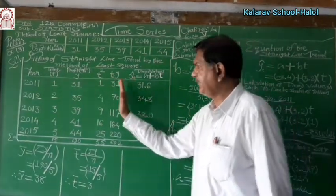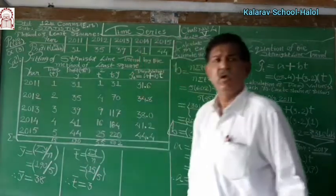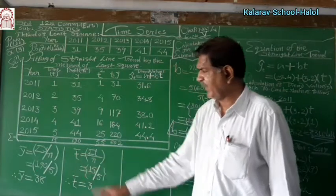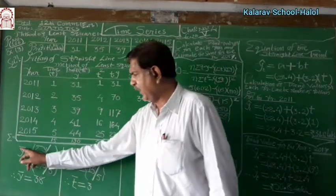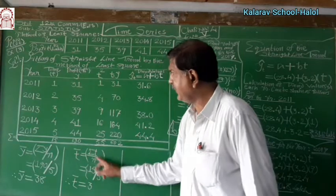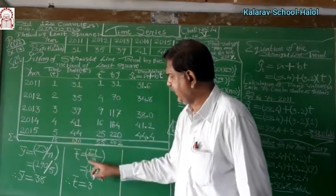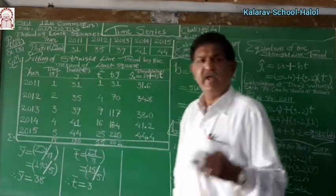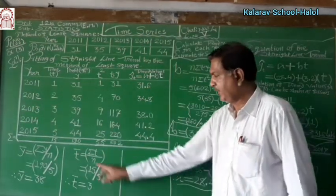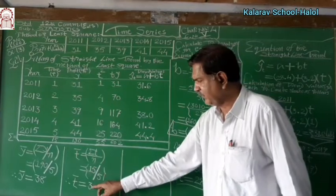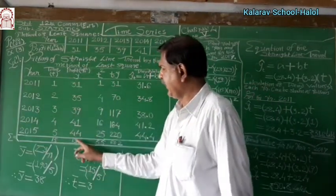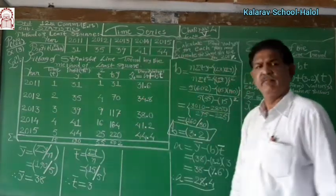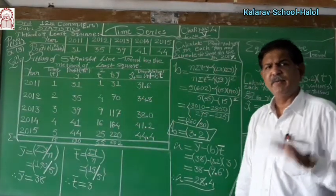After preparing this table, compute T-bar and Y-bar. T-bar is nothing but the average value of T, and Y-bar is the average value of Y. T-bar means sigma T upon N. Sigma T is 15, N is 5 (since there are 5 years), therefore T-bar equals 15 divided by 5, which equals 3. Sigma Y is 190, so Y-bar equals 190 divided by 5, which equals 38.